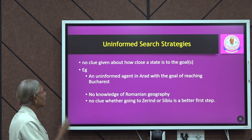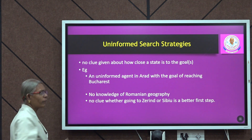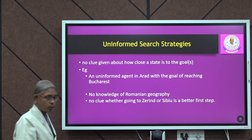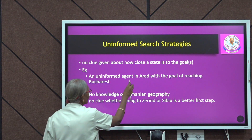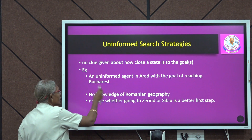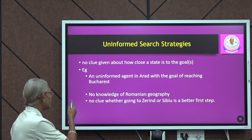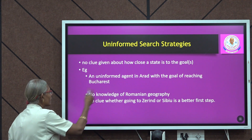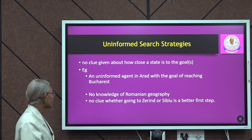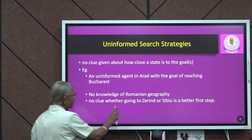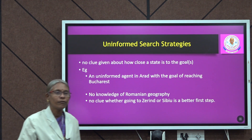For searching we have a strategy called uninformed search strategy. Here, no clue is given to the algorithm about how close a state is to the goal. For example, an uninformed agent in Arad with the goal of reaching Bucharest does not know the map of Romania — it does not know the path from Arad to Bucharest. That is an uninformed agent. It has no knowledge of Romanian geography and does not know whether going to Zerind or Sibiu would be better.